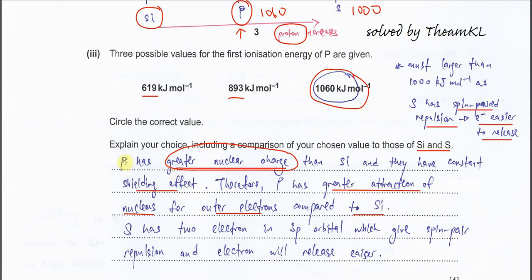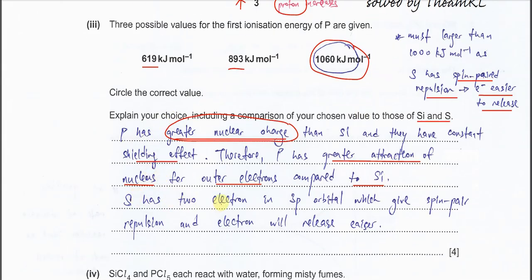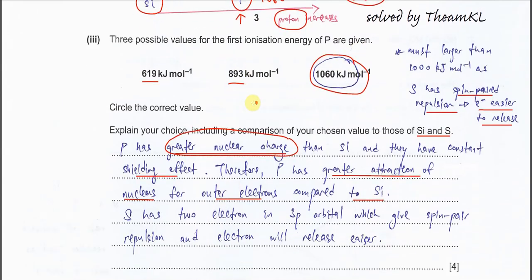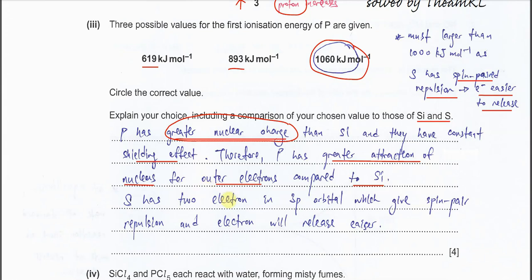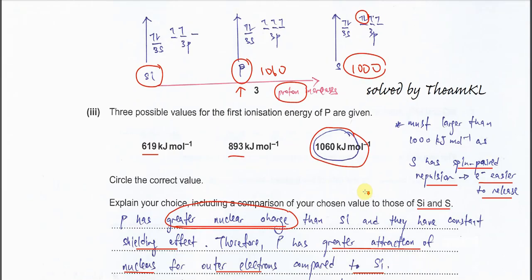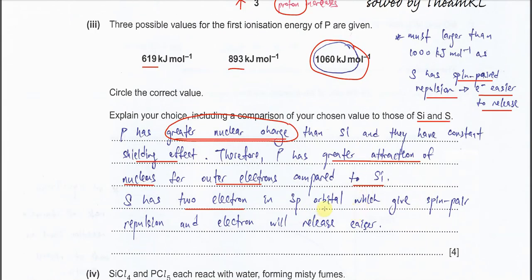After comparing P and silicon, we need to compare sulfur with phosphorus. Why does sulfur have lower first IE than phosphorus? Must use spin pair repulsion to explain. Because sulfur has two electrons in the 3p orbital, these two electrons give spin pair repulsion. Therefore, the electrons release easier and less energy is needed.